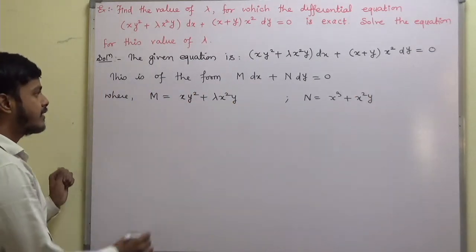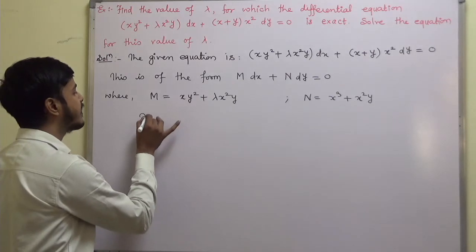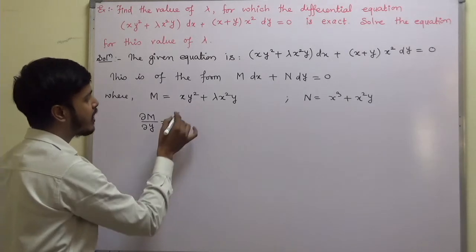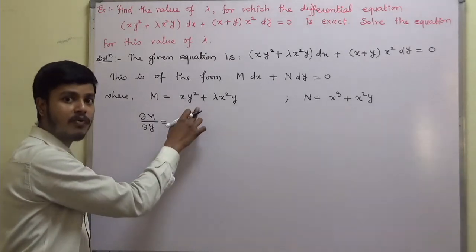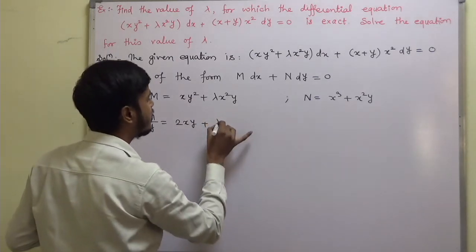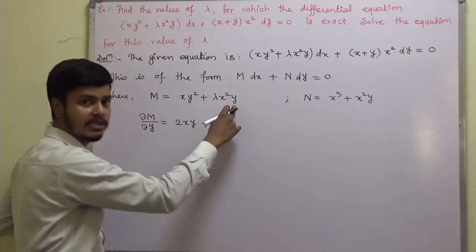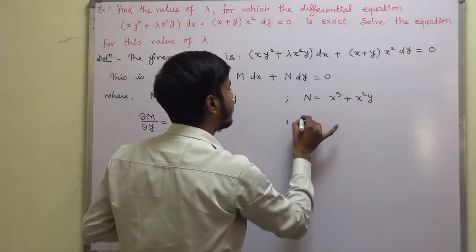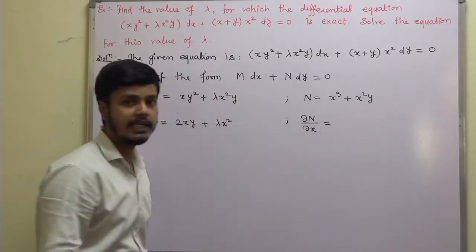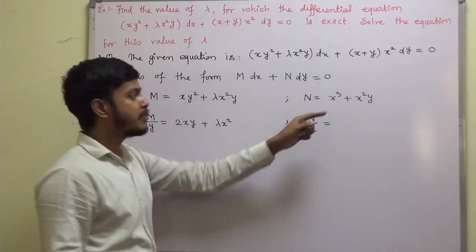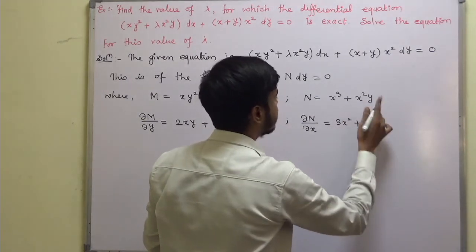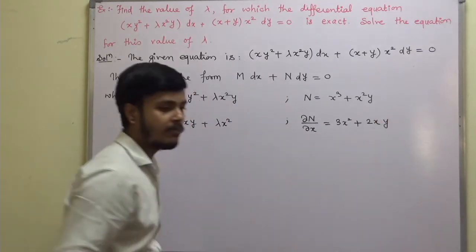Now, find out del M by del y. So del M by del y is 2xy plus lambda x squared, since the constant lambda x squared gives derivative of y with respect to y as 1. And then del N by del x: derivative of N with respect to x is 3x squared plus 2xy.